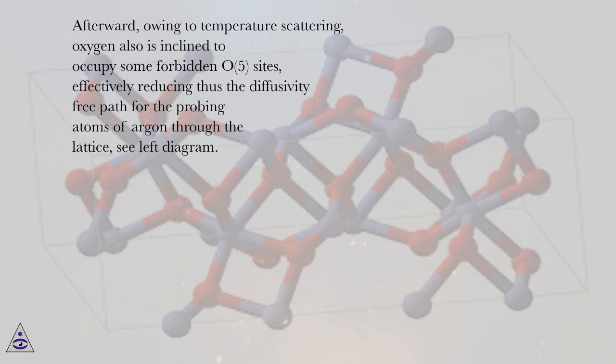Afterward, owing to temperature scattering, oxygen also is inclined to occupy some forbidden O5 sites, effectively reducing thus the diffusivity-free path for the probing atoms of argon through the lattice, see left diagram.